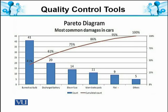Another example is the most common damages in cars. The smaller percentage or frequency factors can normally be removed easily. This is why we can focus on which causes possibly account for removing 80% of the effect.